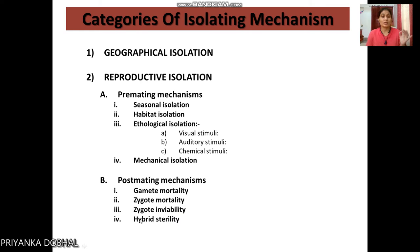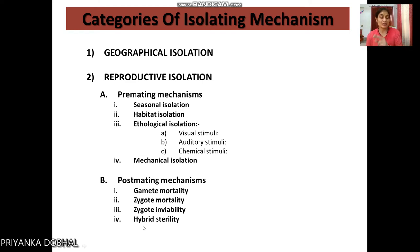Next is hybrid sterility. When two different species mate, they produce a hybrid, but the hybrid is sterile, meaning it cannot reproduce and give birth to new offspring. This is also an isolating mechanism mentioned by Dobzhansky.